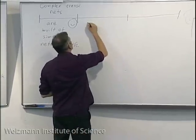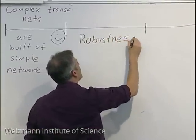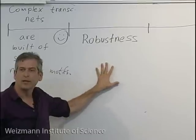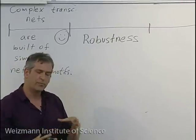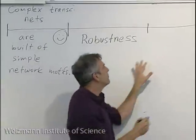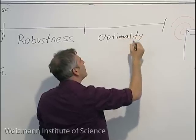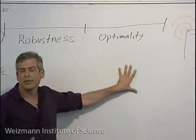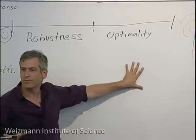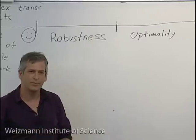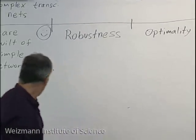Then we'll say goodbye to this topic and have another third of the class talking about robustness — describing systems in bacteria and in the development of an egg into an embryo — and finally we'll talk about optimality, basically the one theory we have in biology: evolution, and how it relates to the structures we see inside the cell.